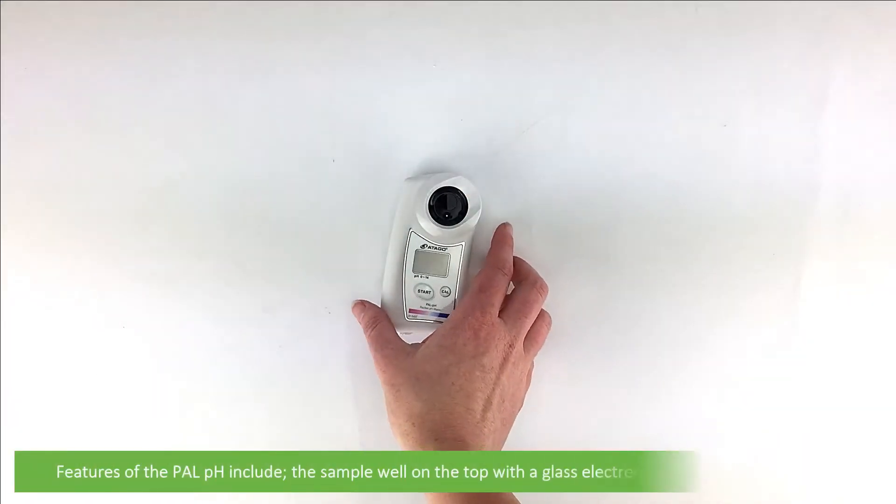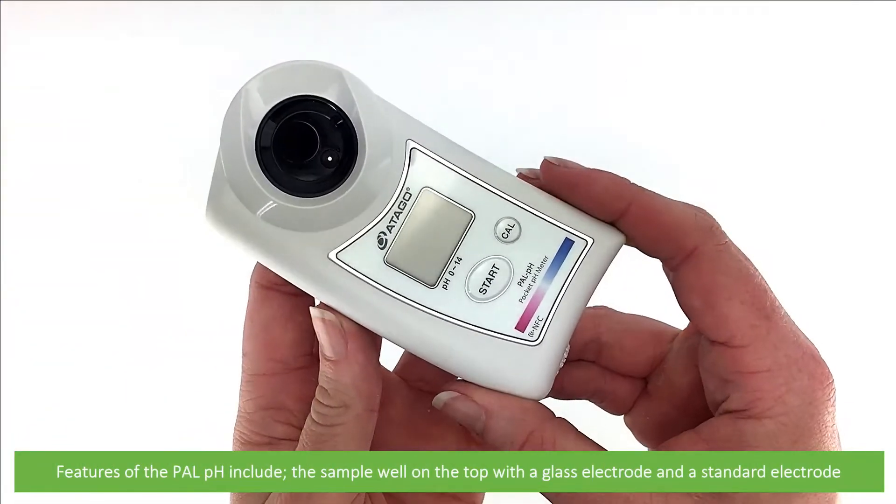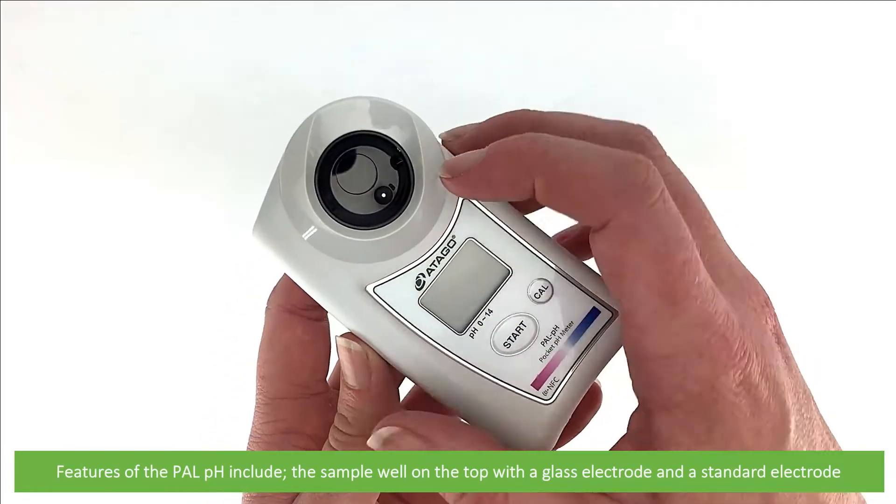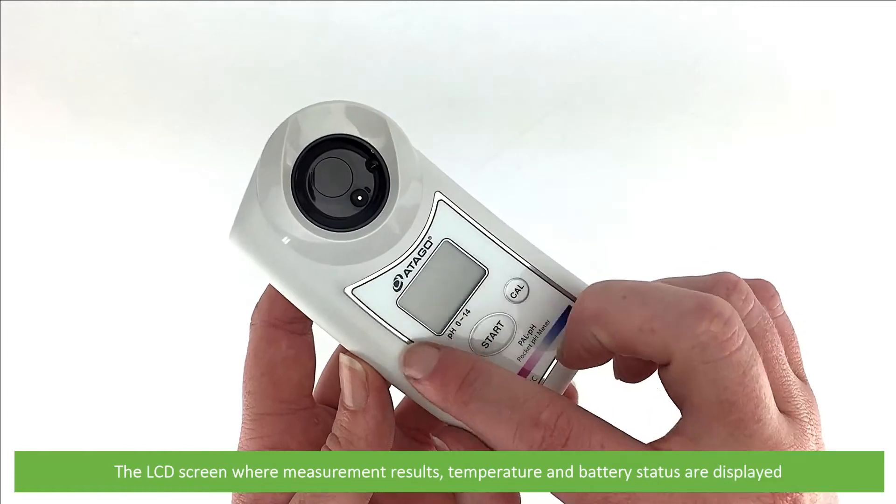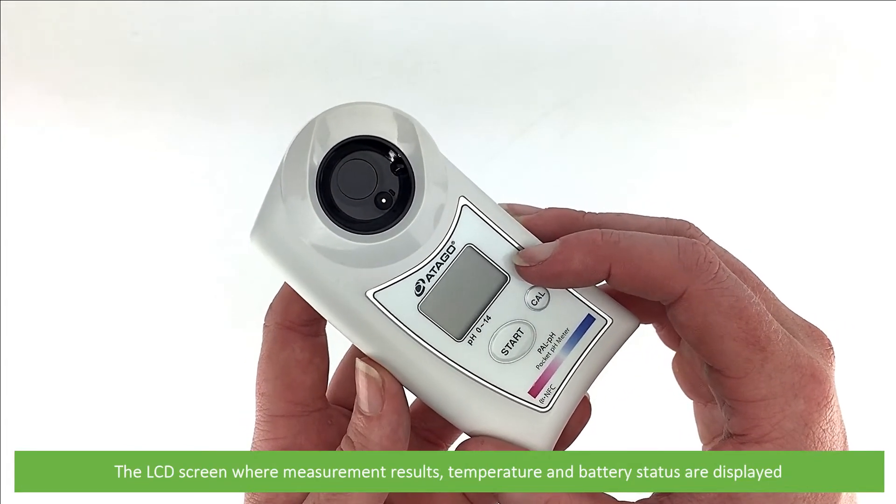Features of the PAL PH include the sample well on the top with a glass electrode and reference electrode, the LCD screen where measurement results, temperature, and battery status are all displayed.